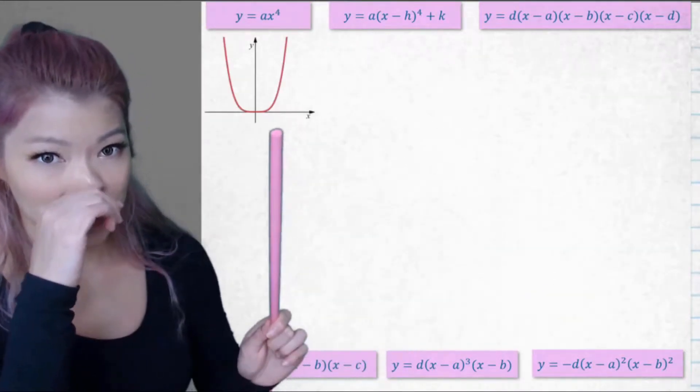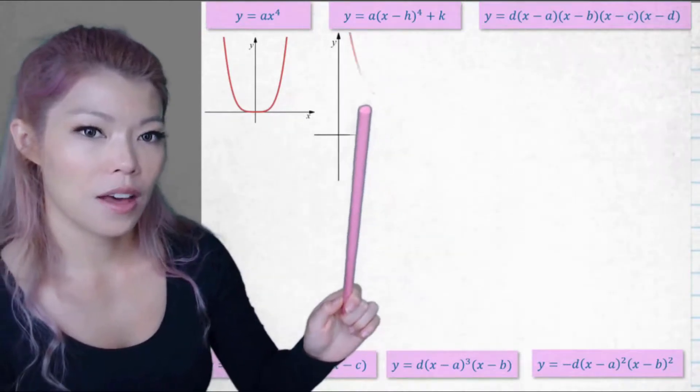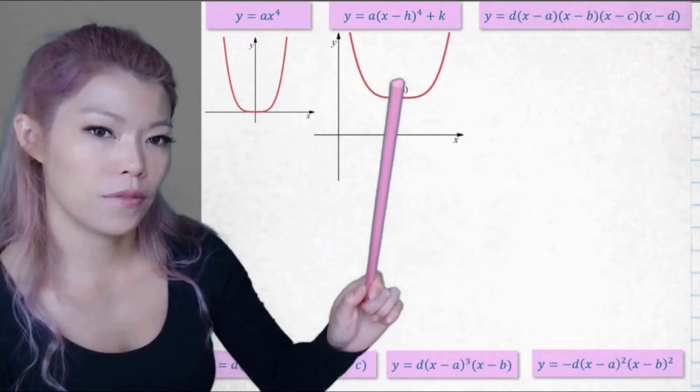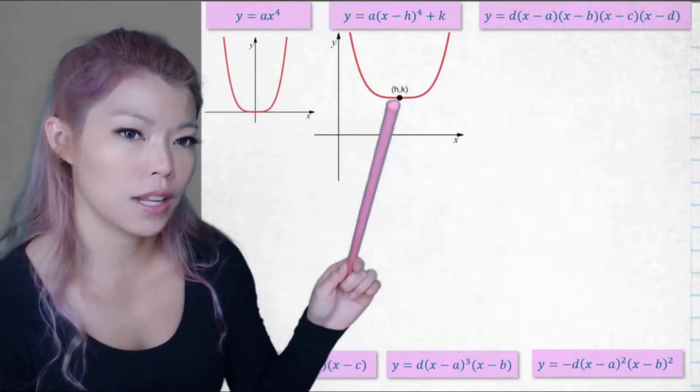So what do these look like? That one is a quartic going through the origin. That one is the quartic going through the point of inflection at H,K, and you can see that it looks like a parabola with a much flatter base.